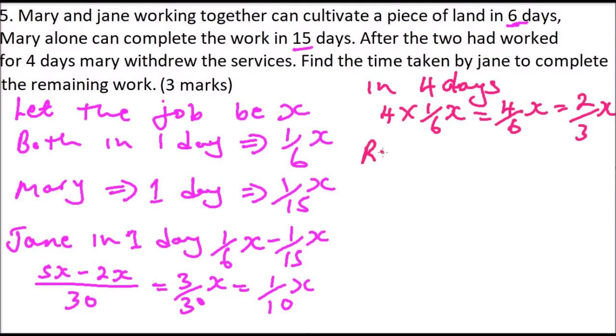What is the remaining job? It means you subtract x minus what they did in four days, which is 2 thirds of x. And this will give you a third x, which we can write as x over 3.